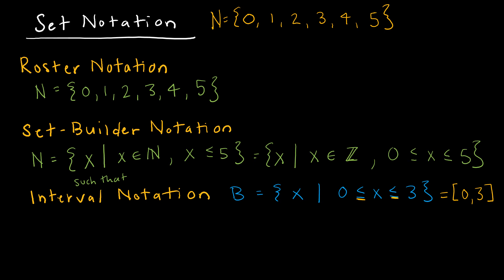If I said set B is the set of all X's such that 0 is less than X is less than 3, notice this is going to be very similar, but now I'm going to use those open brackets. The open brackets is the same as me saying there's no or equal to here. So 0 is not included and 3 is not included, but everything between 0 and 3 is included.